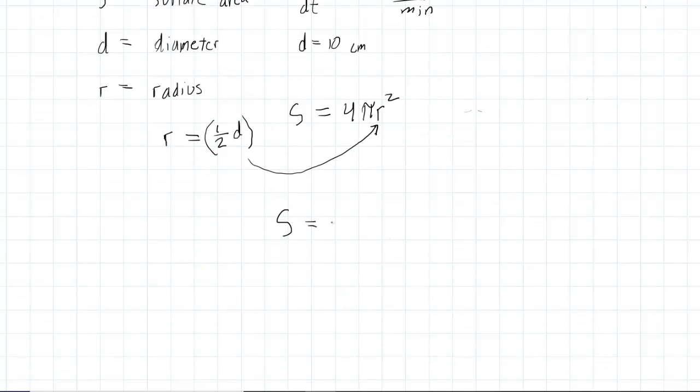We would have the surface area is equal to 4π, and put a parenthesis here, we'll have half of the diameter squared, like this.